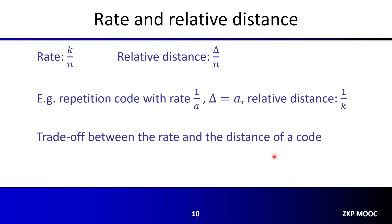Next, I'll define some additional terms. The rate of an error-correcting code is k over n, representing the ratio of meaningful message size to codeword size — a number between 0 and 1 that we want as close to 1 as possible. The relative distance is the minimum distance delta divided by n, the fraction of positions that differ between any two codewords — also between 0 and 1, and we want it as large as possible. For the repetition code with rate 1/a, repeating each symbol a times, the distance is a and the relative distance is 1/k, which decays as k increases — so it is not asymptotically good.